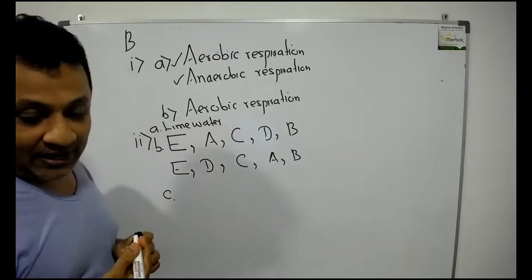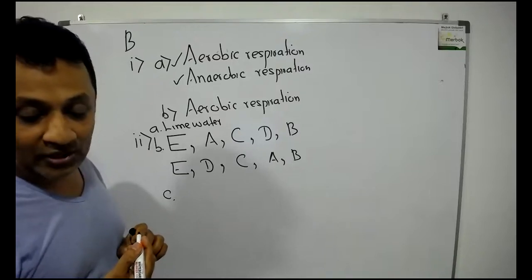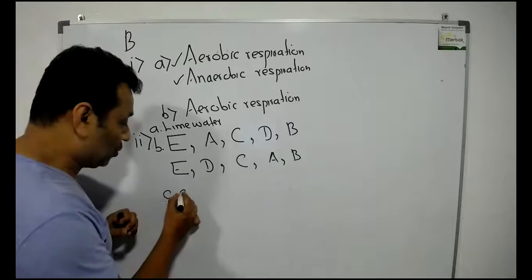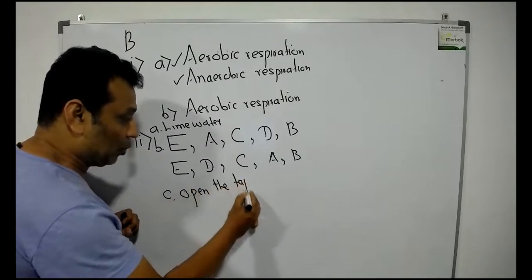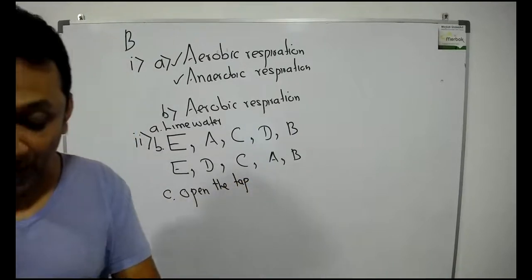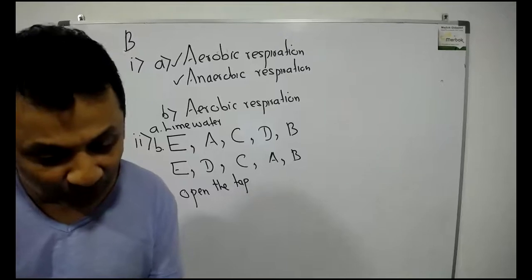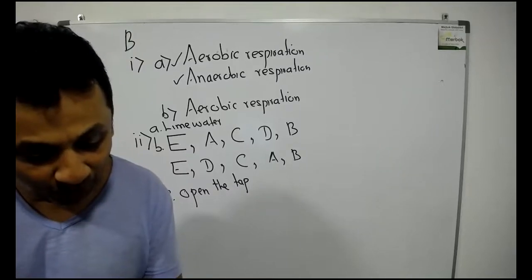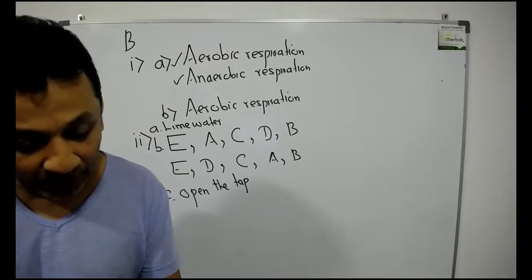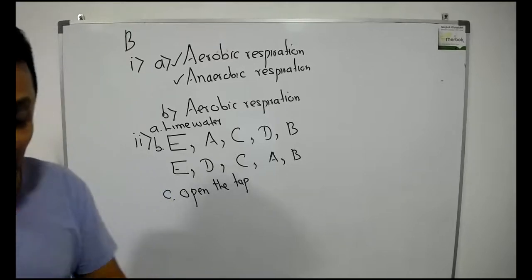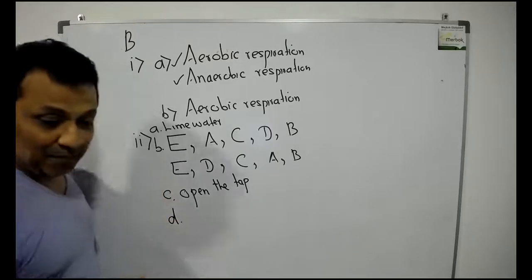Coming to the C question: State what should be done after connecting all the bottles correctly. You have to open the tap. If you open the tap, then only the air will start to flow. So you have to open the tap. That's the thing you have to do. Then automatically the water will start to flow out.